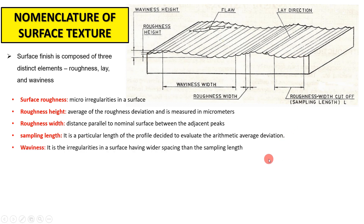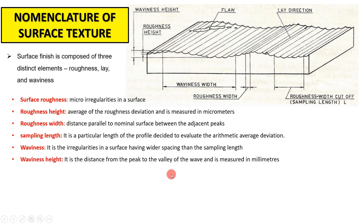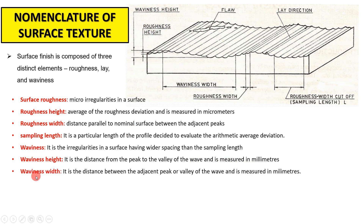Waviness is also an irregularity in the surface, but with wider spacing than the sampling length. Waviness width is the distance between adjacent peaks or valleys of the wave, measured in millimeters. Waviness height is the distance from the peak to the valley of the waves, also measured in millimeters — and it is greater than roughness height. Roughness is measured in micrometers, waviness in millimeters.